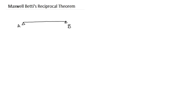Let's start with a simply supported beam AB. There is a point C here and point D here. A load P is applied at C. For this application of load, the beam will deflect. Let the deflection at C due to this load P be δC, and there is also a deflection at D, δD.